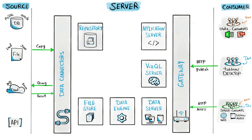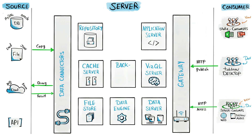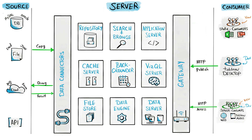There are other notable Tableau Server components. The Cache Server stores almost everything — images, icons, query results, dashboards — so if you open a dashboard that was already accessed before, data is pulled from the cache. The Backgrounder lets you create a schedule to refresh extract data; it checks the schedule every 10 seconds and triggers the refresh when the time comes. The Search and Browse component allows users to search for content by searching inside the repository and returning results.